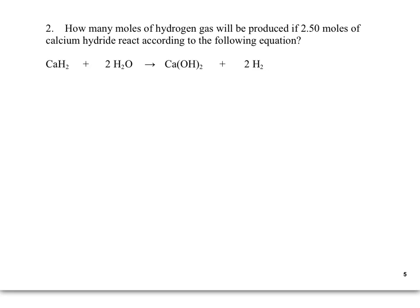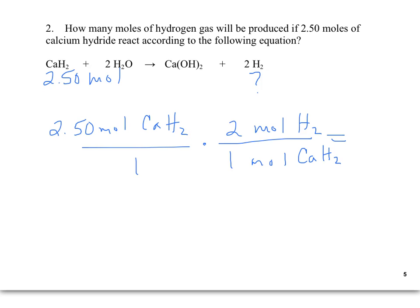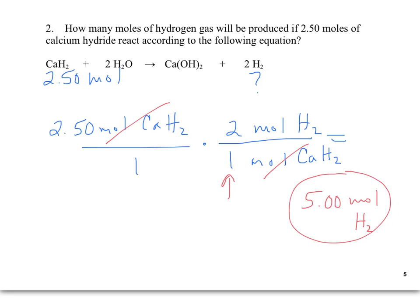In the next problem, we want to know how many moles of hydrogen gas will be produced if 2.50 moles of calcium hydride react according to the equation. I recommend using factor label: starting with 2.50 moles of calcium hydride, I set up a factor to cancel moles of calcium hydride and find moles of hydrogen, using the coefficients in the balanced chemical equation. I get 5.00 moles of hydrogen — three significant figures to match the 2.50 moles.